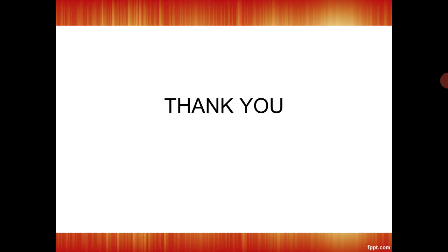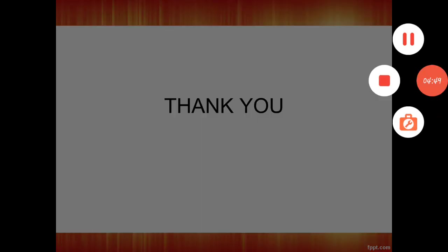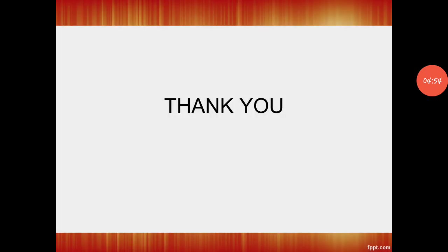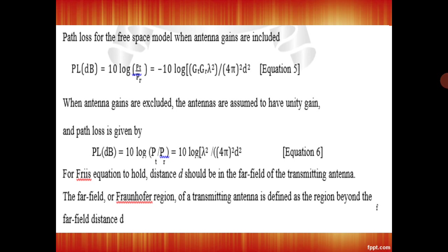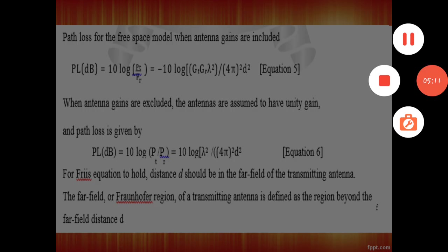Friis is the mathematician and scientist who invented this equation, called the Friis equation, to calculate the transmitting antenna power. Using this, we can find the transmitting antenna power. Path loss is where antenna gains are included and antennas are assumed to have unity gain, given by PL in dB — dB being the decibel unit. Hope you understand what is path loss and what is radio wave propagation.